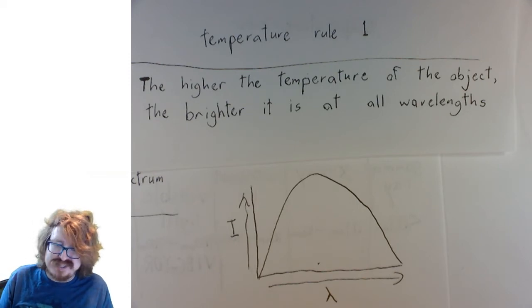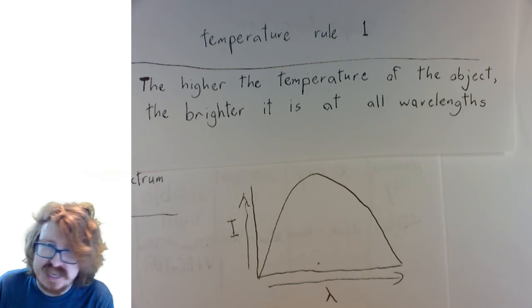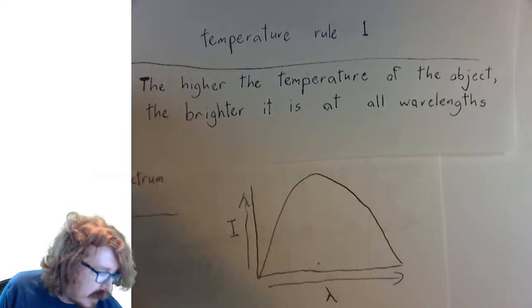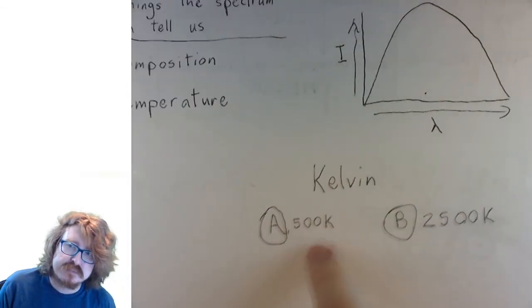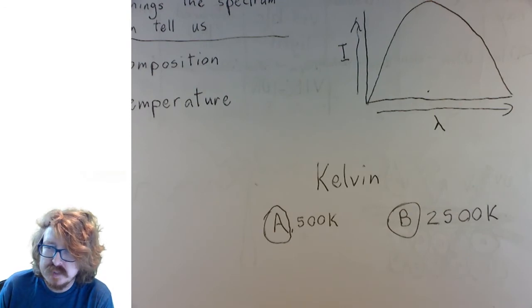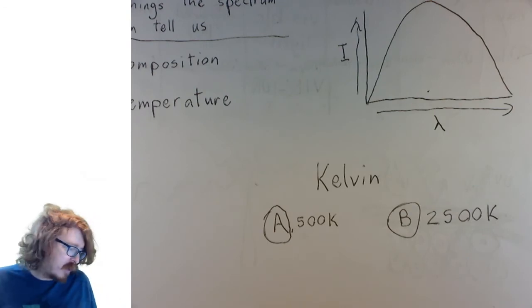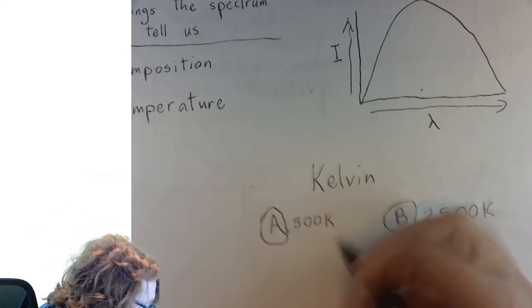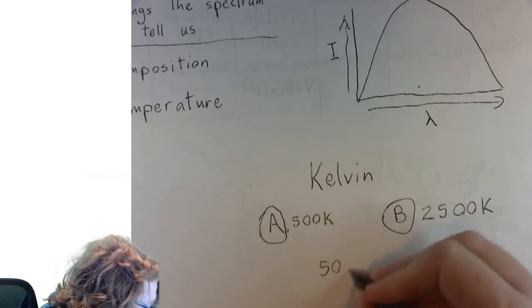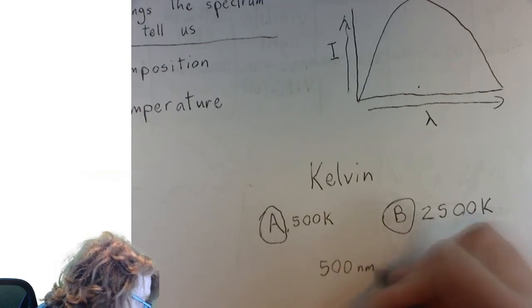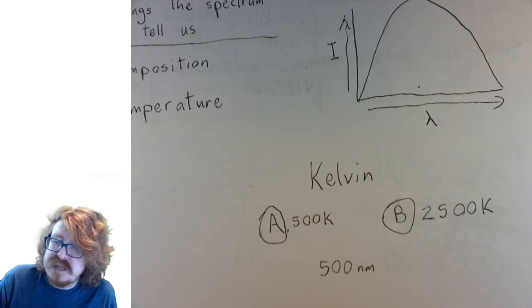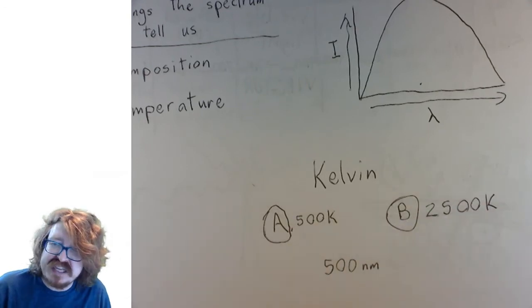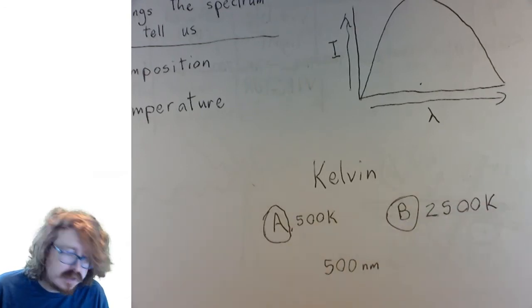Let me ask you a quick question. This might look kind of like a test question. Check this out. Let's say I've given you two objects - actually, let's say I've given you these two objects, object A and object B. And let's say I ask, which one of these is going to give off more light with a wavelength of 500 nanometers? Which one would be correct? If I gave you these two objects, A and B, with these two temperatures, which one's going to give off more light at this wavelength?